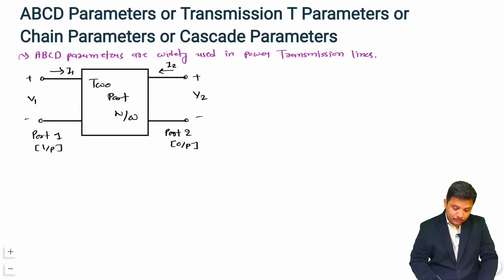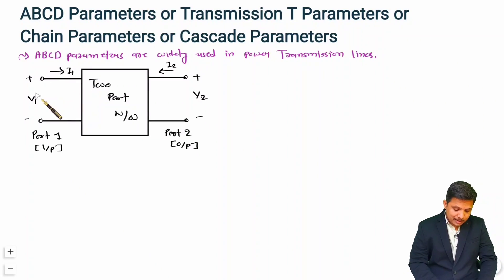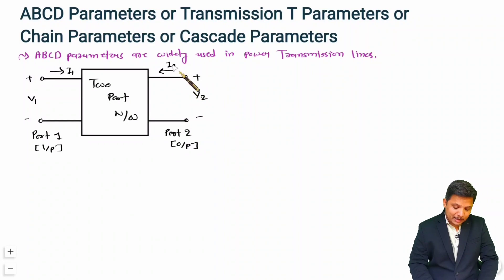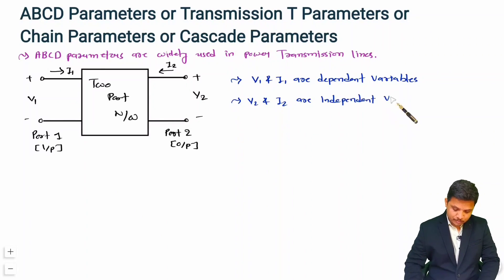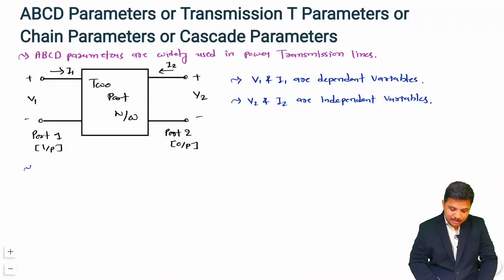Now to analyze ABCD parameter, we identify the dependent and independent variables. V1 and I1 are the dependent variables in ABCD parameters, and V2 and I2 are the independent variables. When we form ABCD parameter equations for this two-port network, the equations of V1 and I1 depend on V2 and I2.